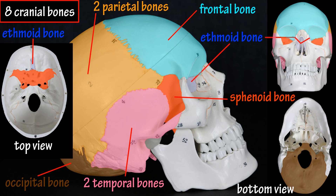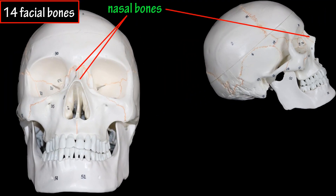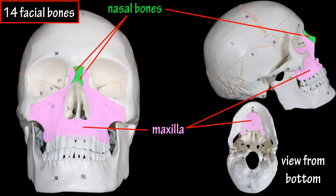And the ethmoid bone, which is located in the inner part of the skull, and it extends into the inner part of the eye sockets. The facial bones include the two nasal bones, located between the eye sockets, forming the upper part of the bridge of the nose. Two maxilla bones, which extend backwards, forming the front of the upper jaw, part of the nasal cavity, and the bottom portion of the eye orbits.